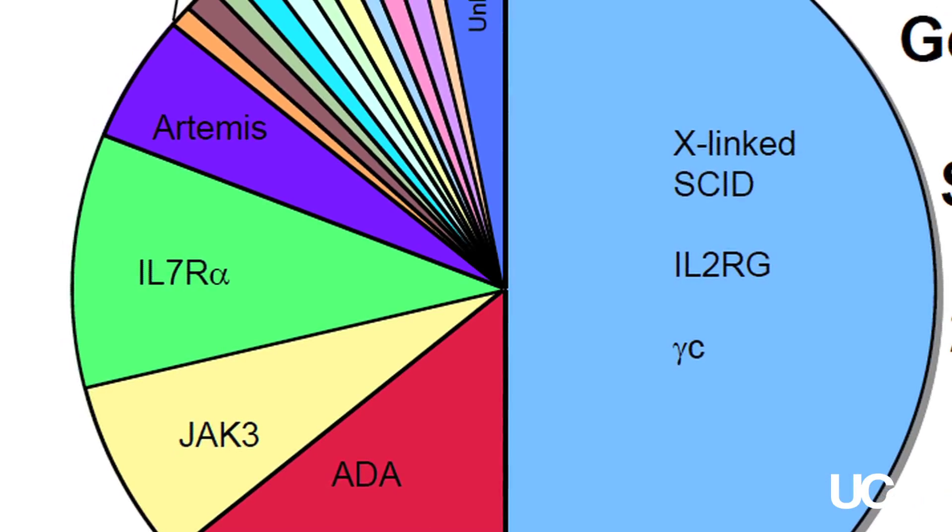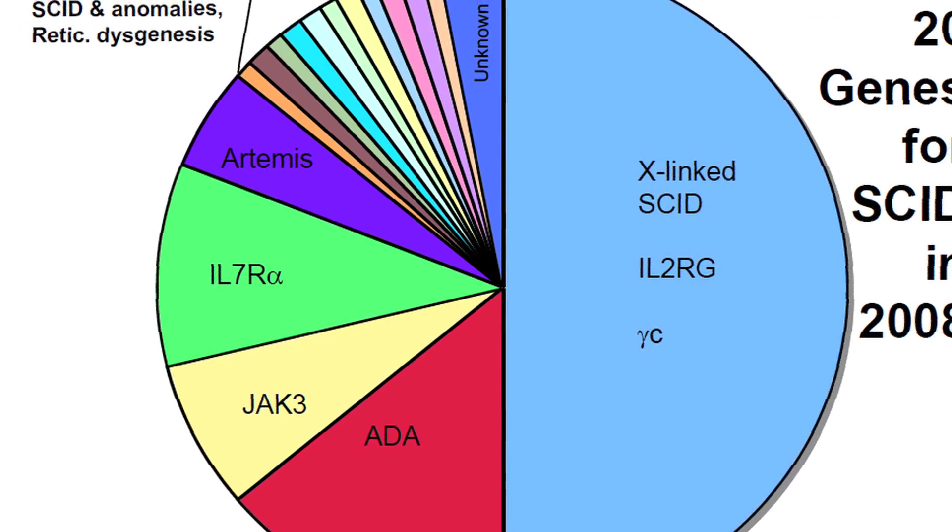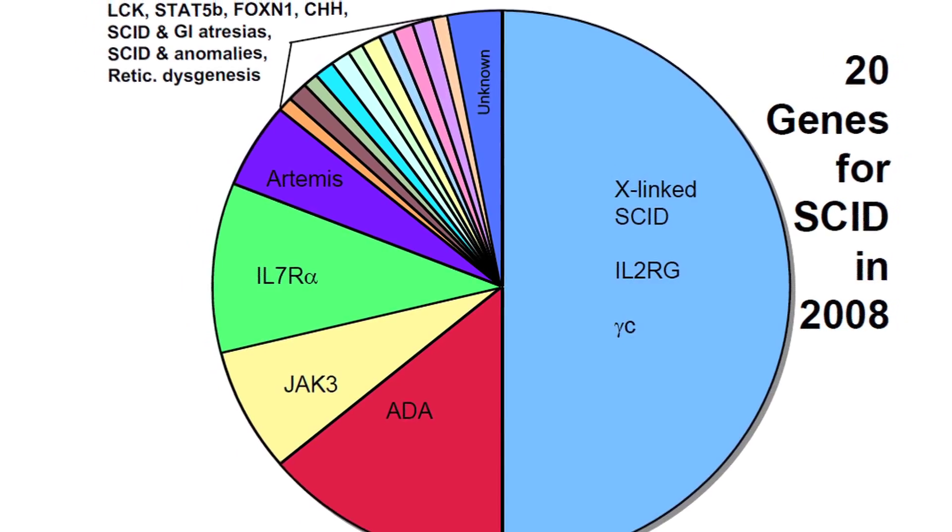There are several different genetic forms of SCID. The most common is the X-linked form that affects boys, and I was involved in discovering the gene for X-linked SCID.